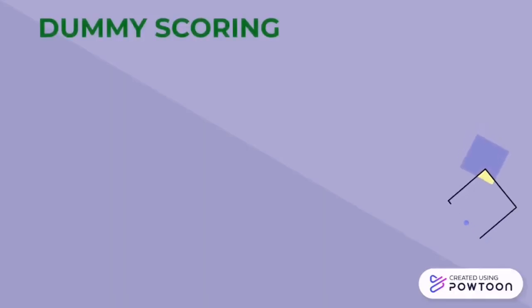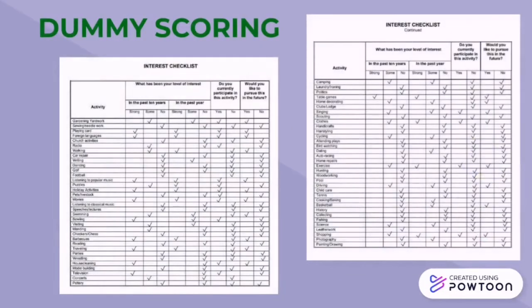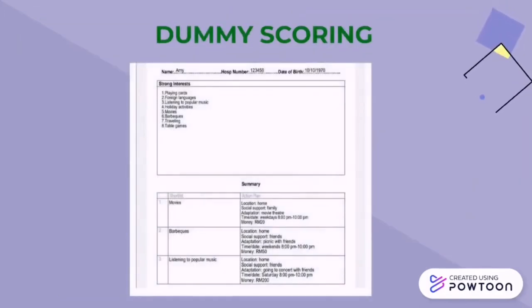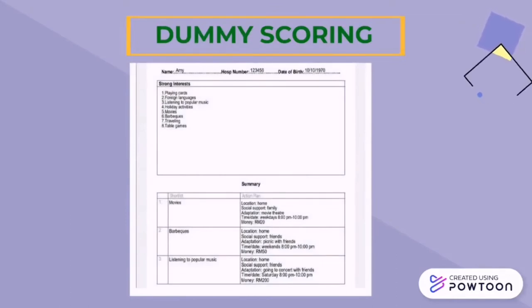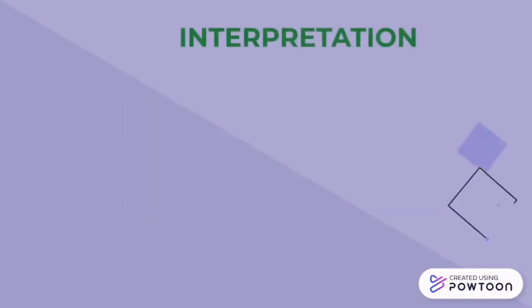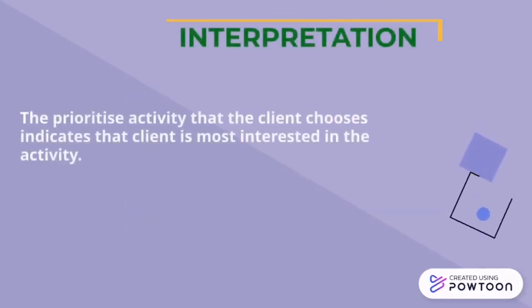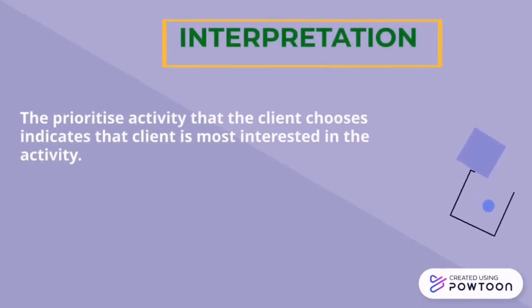That's all. See you in the next session. Here is an example of dummy scoring. For the interpretation, the prioritized activity that the client chooses indicates that the client is most interested in that activity.